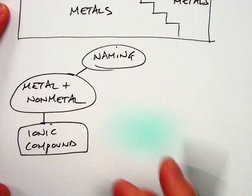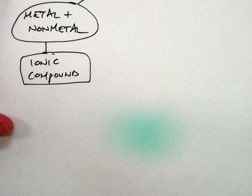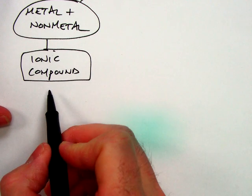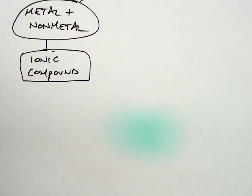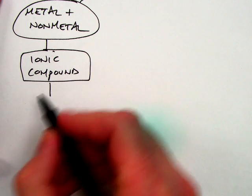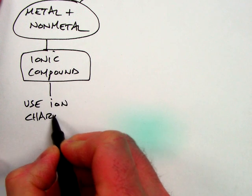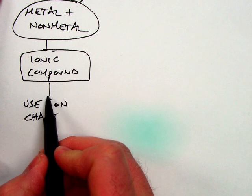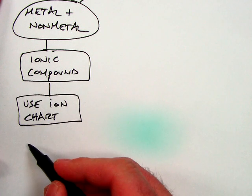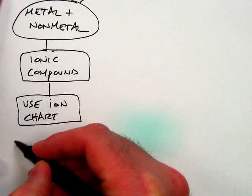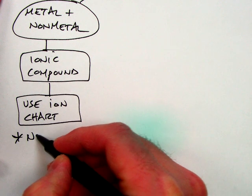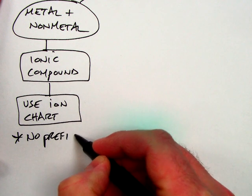And what you're going to do is you have an ionic compound, so you have a compound that's made of ions, things that have charges. So either a full positive charge or a full negative charge. And so what you're going to do, in order to name your compound, is you're going to use your ion chart. And another thing is that we're going to say no prefixes.